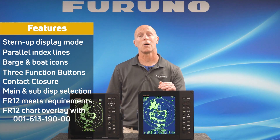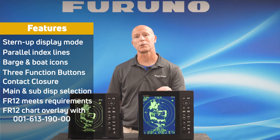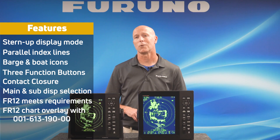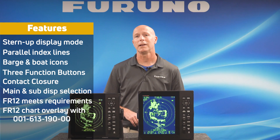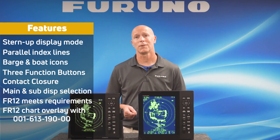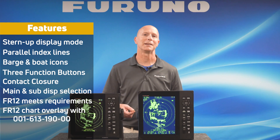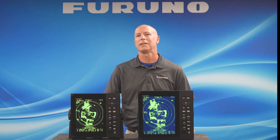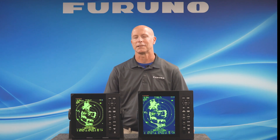The FR-12 also offers a radar chart plotter overlay kit, part number 001-613-190-00. As I mentioned earlier, the FR-10 and FR-12 will work with nine different Furuno radars, giving you the best opportunity to choose the right radar antenna for your vessel.